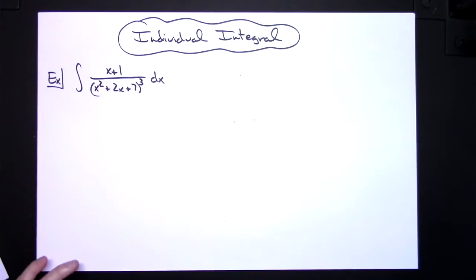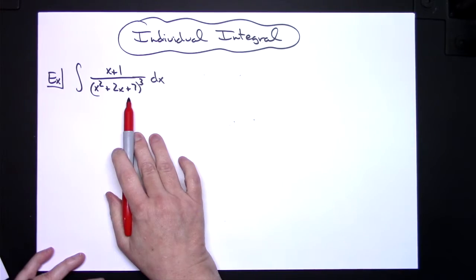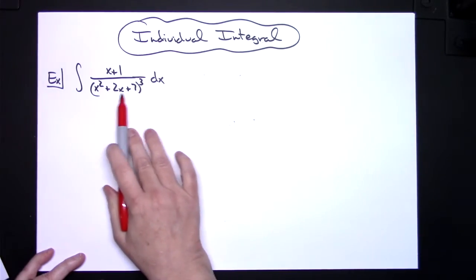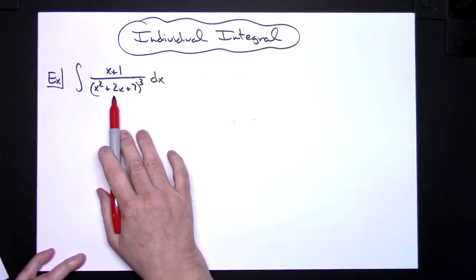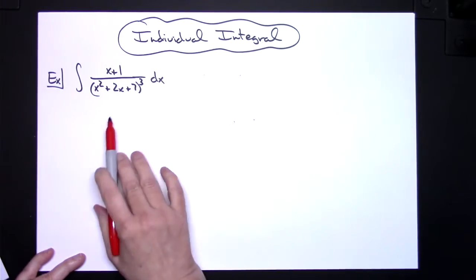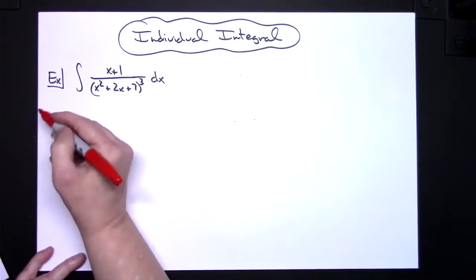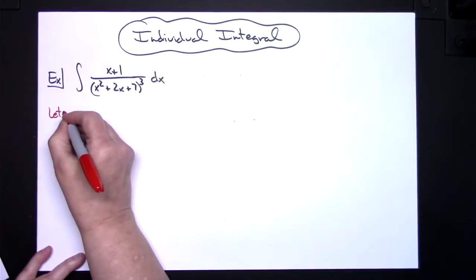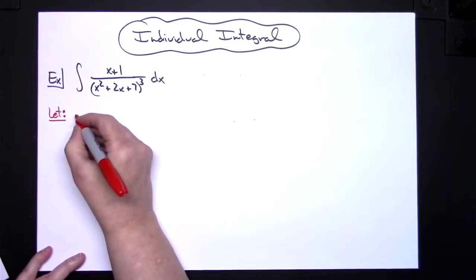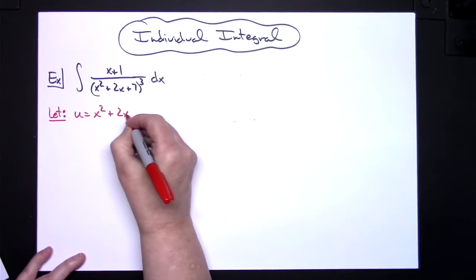The first thing we need to do is take a look at this integral and figure out where we're going to let our u be. Generally we like to look at the inside portion if we have any type of composite things going on. We've got something being raised to the third power, so I'm going to let my u be this whole inside part. I'm going to let u equal x squared plus 2x plus 7.